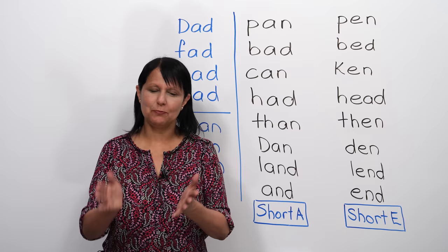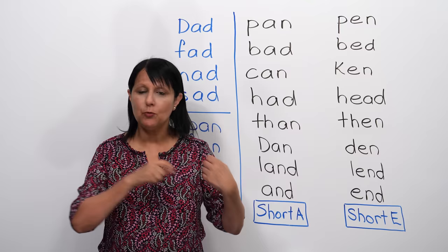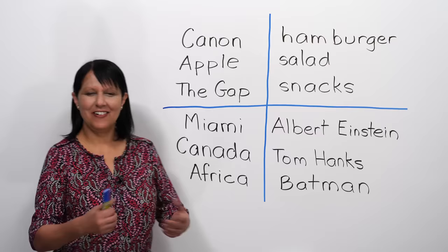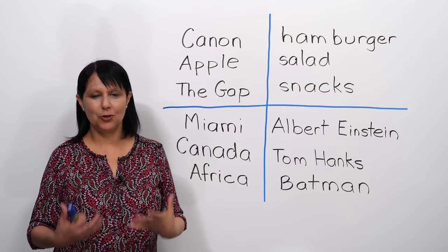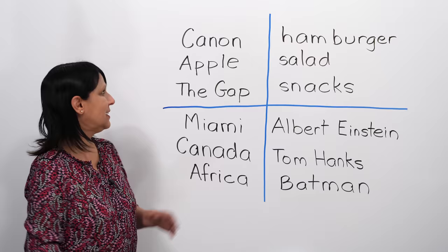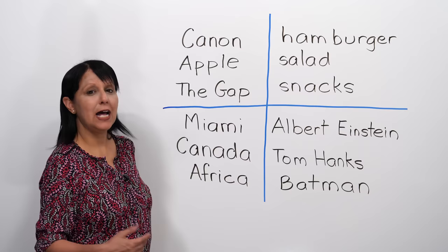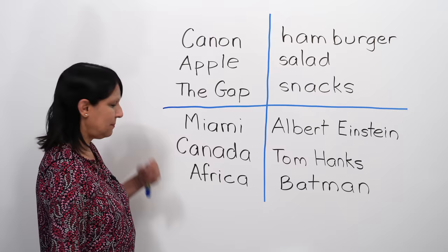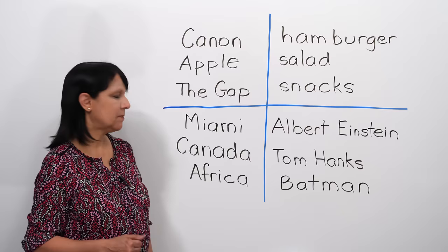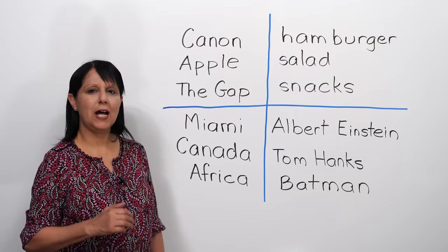So now, let's practice a few more words so that you can really apply whatever we've learned here about the short A. So now, let's see how the short A sound appears in the names of famous companies, places, foods, and people. So now, I'm going to say it, you just repeat after me. Cannon. Apple. The Gap. Good. Let's go and say the names of some places. Miami. Canada. Africa.